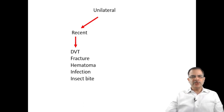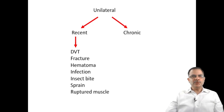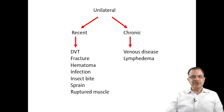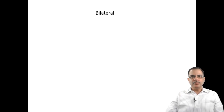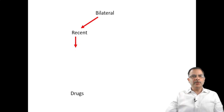Recent onset unilateral swelling can be due to DVT (deep vein thrombosis), fractures, hematoma, infection, insect bite, sprain, or ruptured muscles. Unilateral swellings that are chronic — more than three months — are due to venous disease like varicose veins or venous insufficiency, lymphedema, vascular malformations, or reflex sympathetic dystrophy.